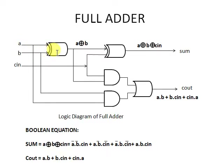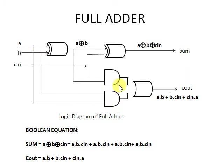A and B are given to XR1, producing A XOR B, which is given to XR2 as input along with C-in. The same input pattern goes to the AND gates: the first AND gate takes A XOR B and C-in, and the second AND gate takes A and B. These two AND gate outputs are added in the OR gate, producing C-out. The Boolean equations are: Sum = A XOR B XOR C-in, expanding to Ā·B̄·C-in + A·B̄·C̄-in + Ā·B·C̄-in + A·B·C-in, and C-out = AB + BC-in + C-in·A.